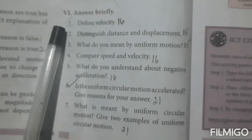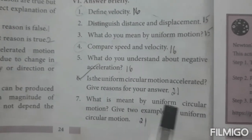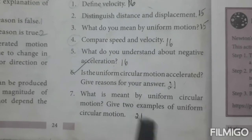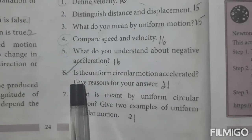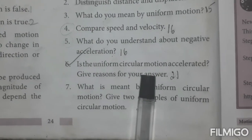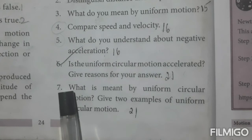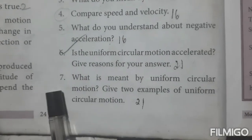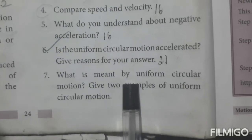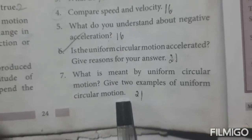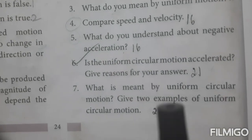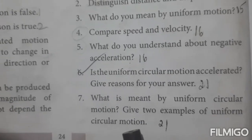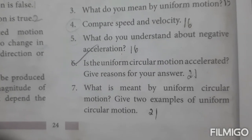Question number 6: Is uniform circular motion accelerated? Give an example. Question number 7: What is meant by uniform circular motion? Give two examples. The answers to these two questions are given in this video — see and write in the book. Thank you, students.